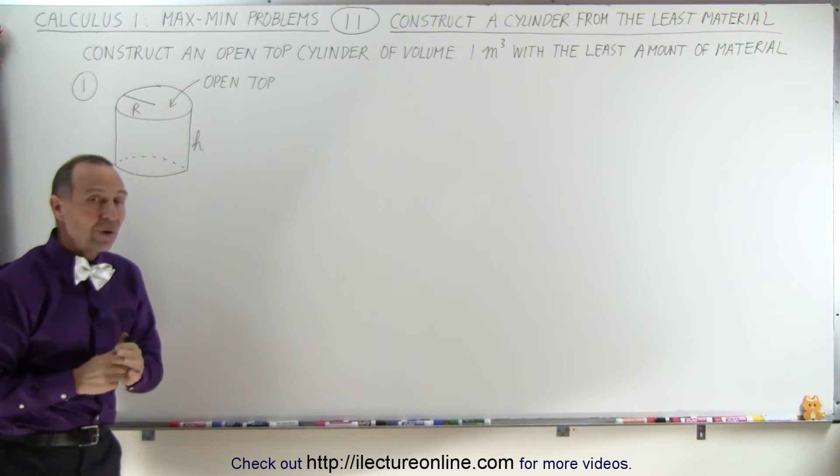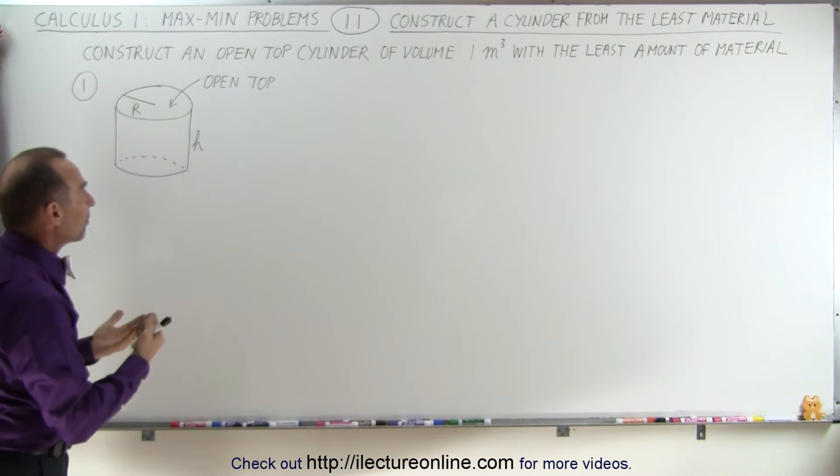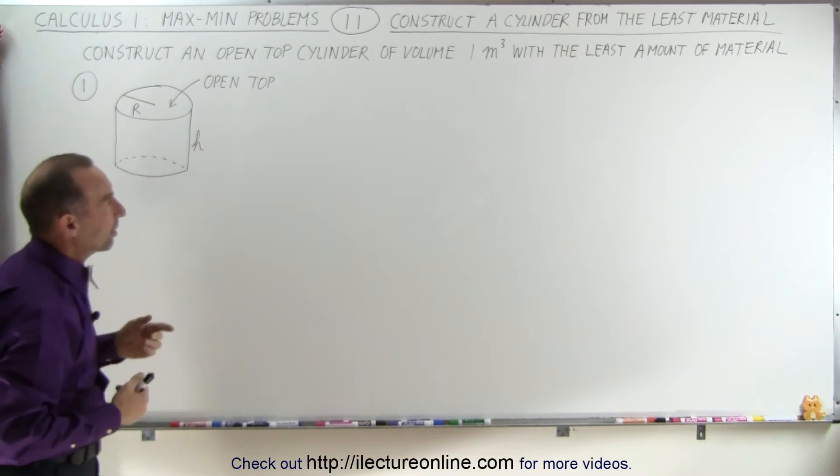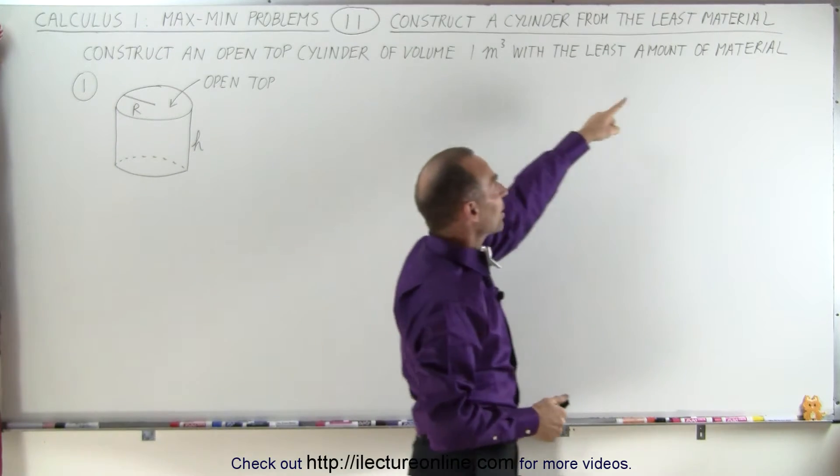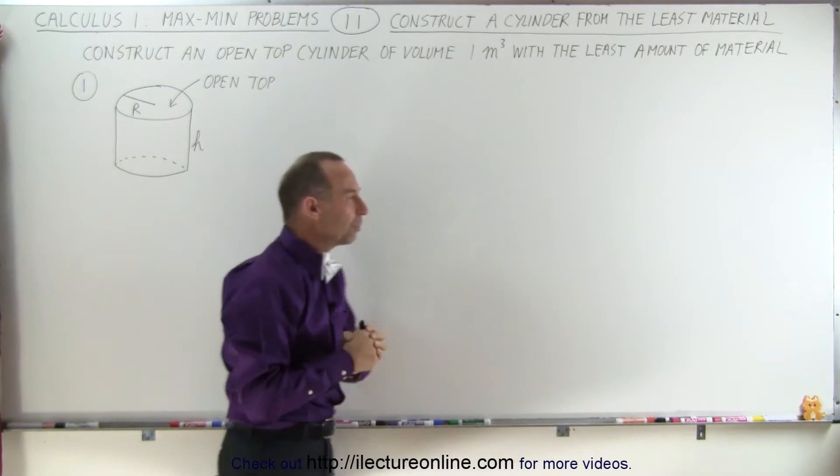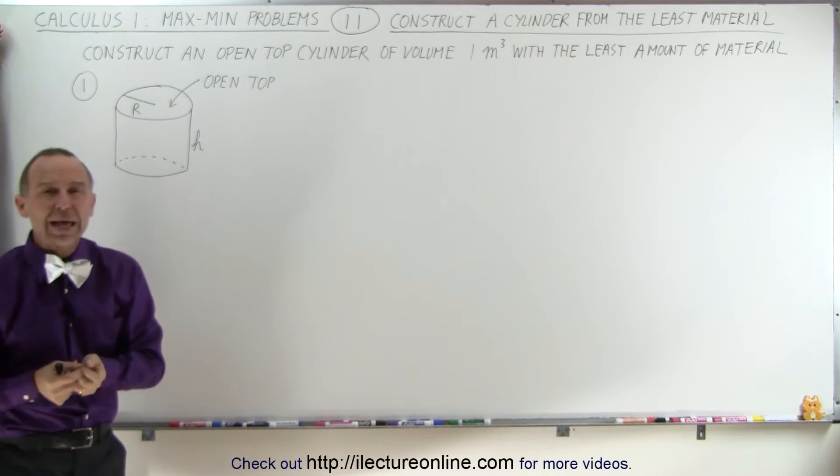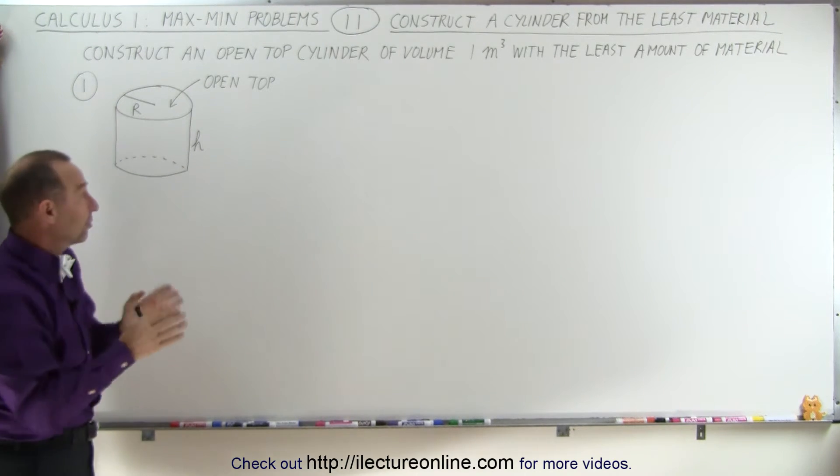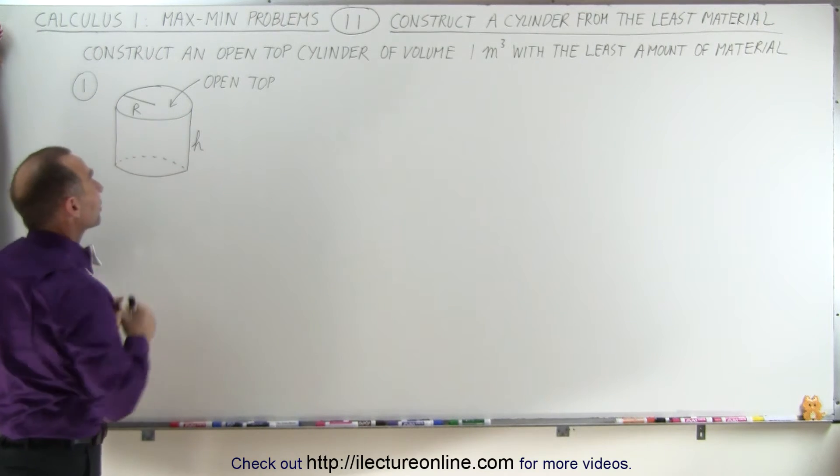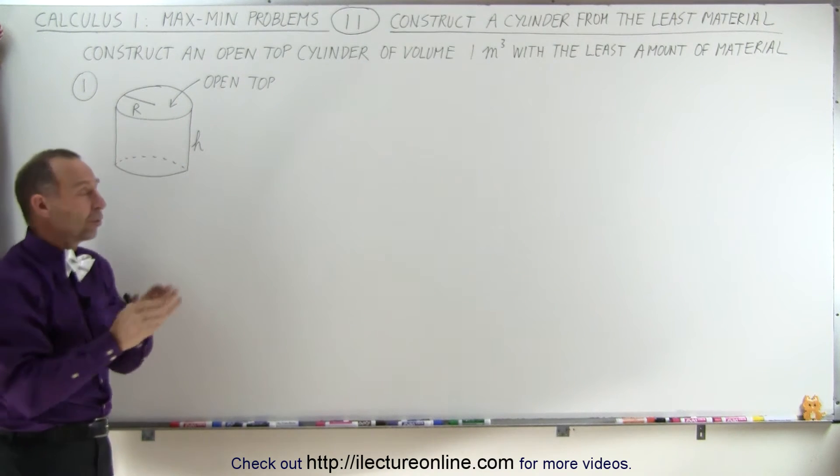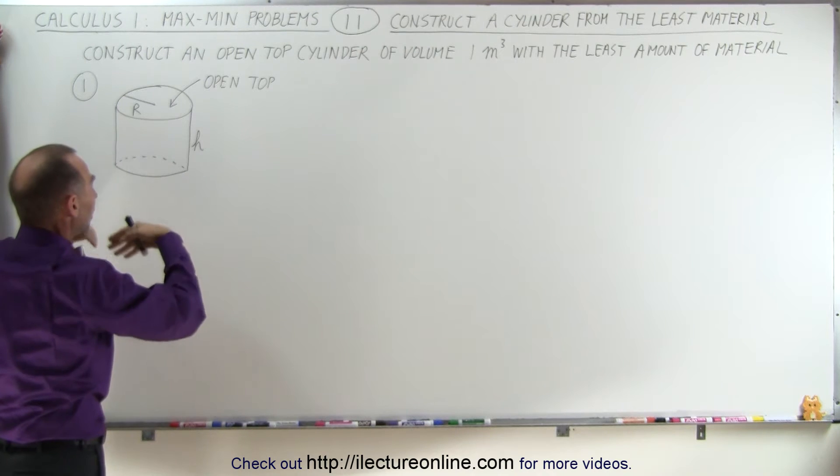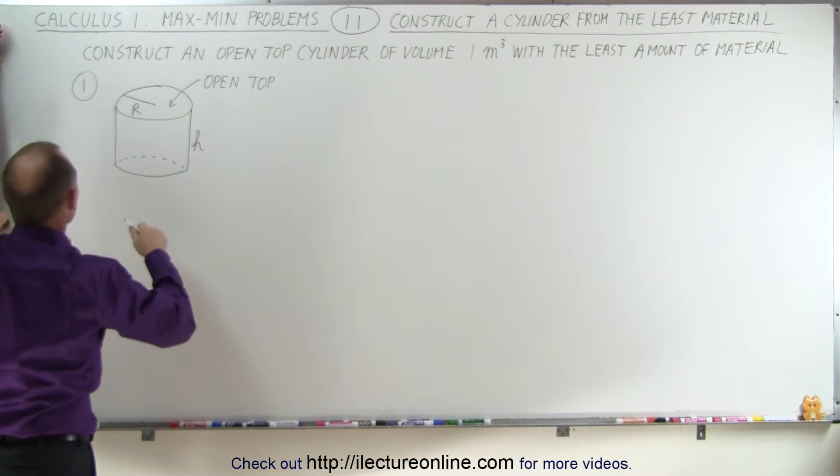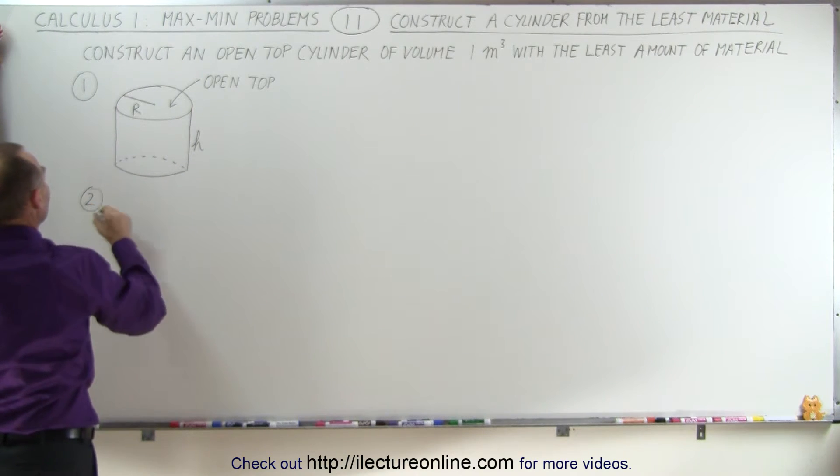The next step is we're trying to find out what's being maximized or minimized. In this case, they tell us the least amount of material, so the amount of material is being minimized. But how do we represent that mathematically? Well, the least amount of material really means the least amount of surface area. So we can say that surface area is being minimized.